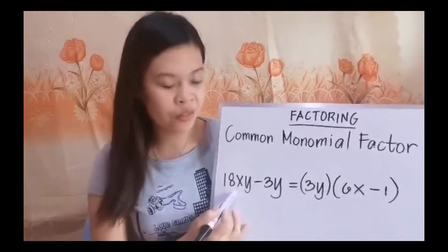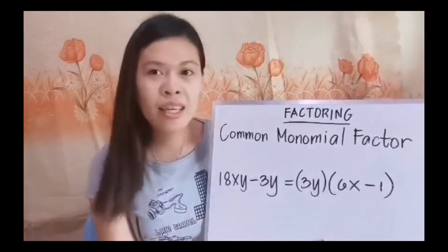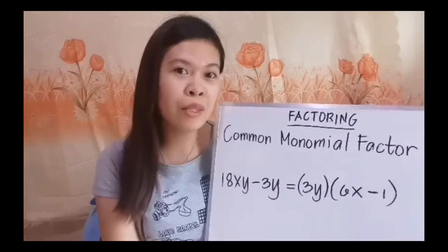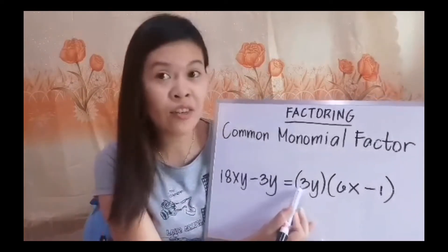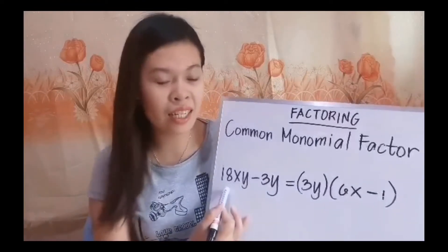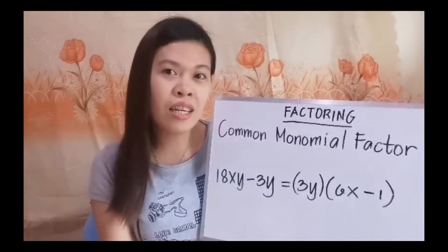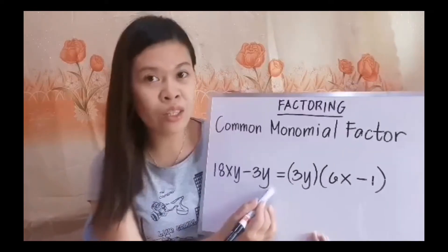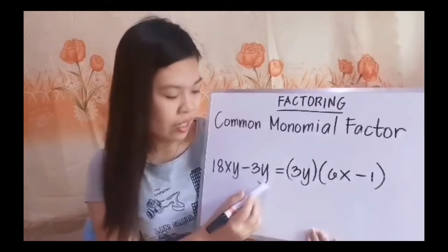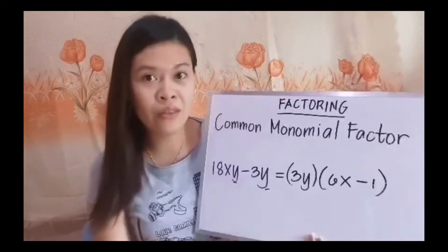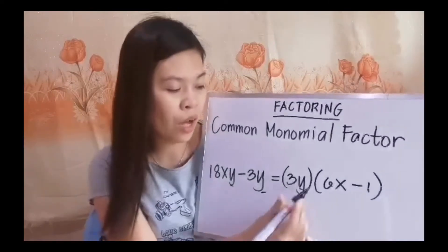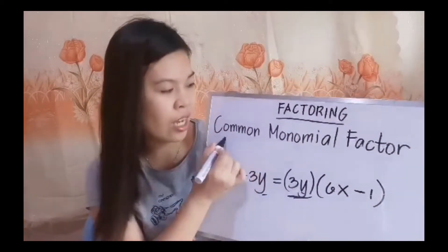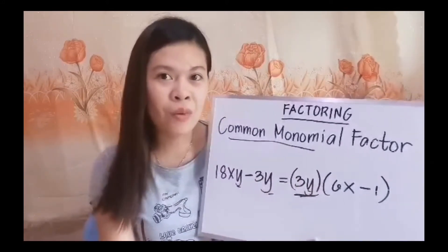Let's consider first the numerical coefficients. We have 18 and 3. Do you think there is a common factor between 18 and 3? Yes, the common factor between 18 and 3 is 3. After considering the numerical coefficients, we now consider the variables. We have x and y in the first term, and y in the second term. What is common? The common variable is y. Combining the common factors, we have 3 and y, so 3y is our common monomial factor.